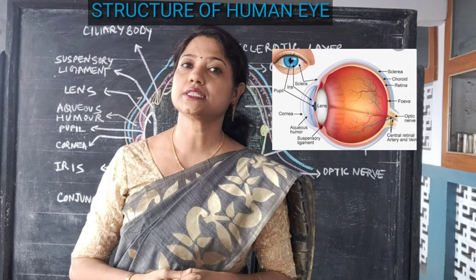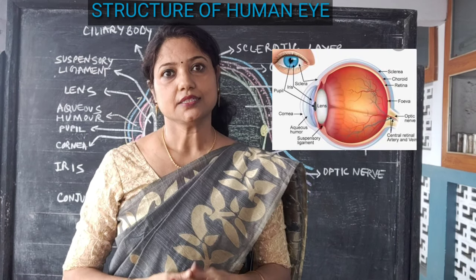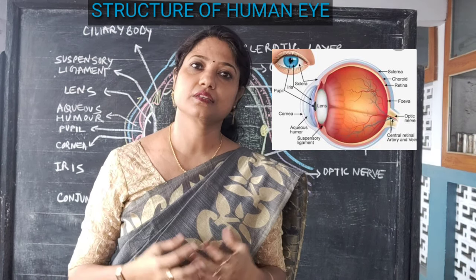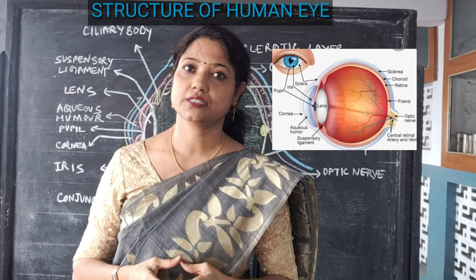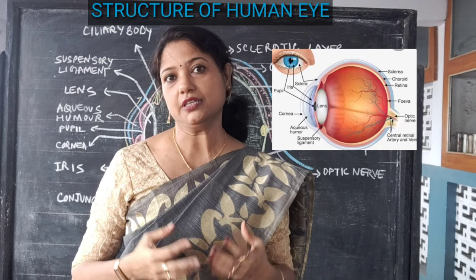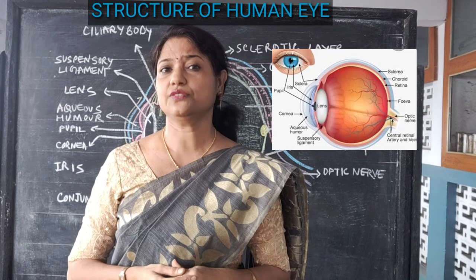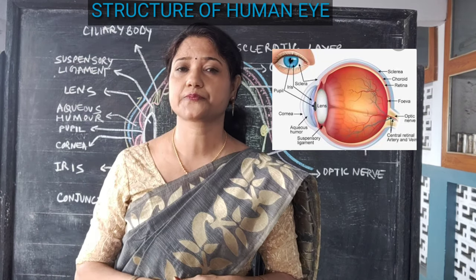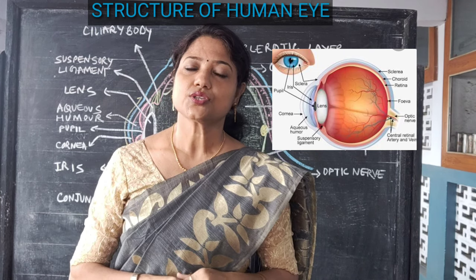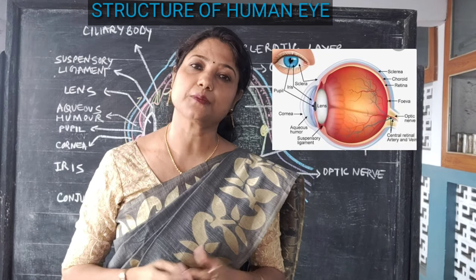Then we have tear glands at the upper part of the eye which secrete tears. These tears keep the eyes lubricated, protect the eyes from foreign particles, and wash away any kind of foreign particles when they enter into our eyes. Then we have tear ducts at the corner of our eyes which collect these tears. So these are the different parts which we can see externally, and all these parts are protective in nature.